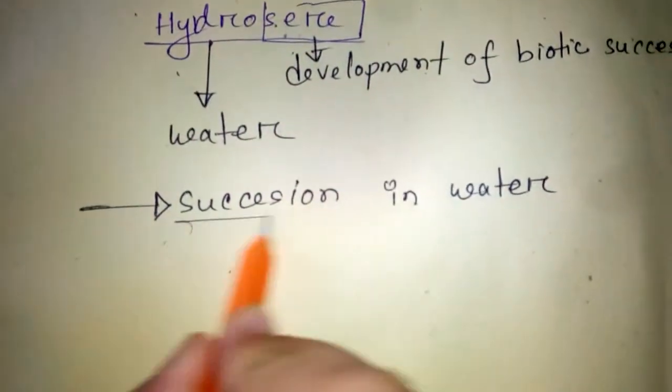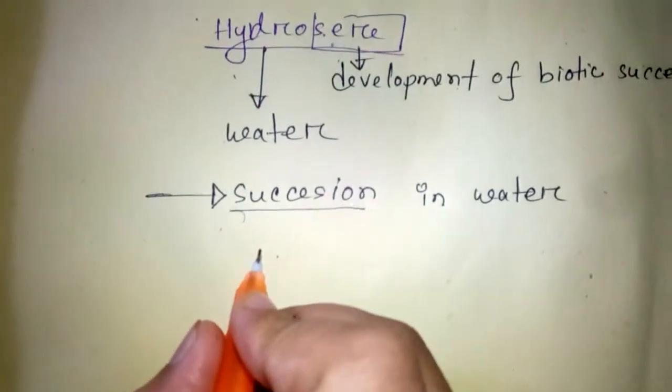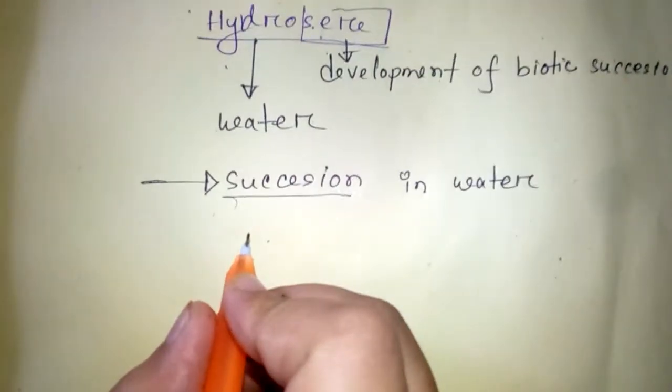What is succession? Succession is a process by which ecosystem changes develop over time.